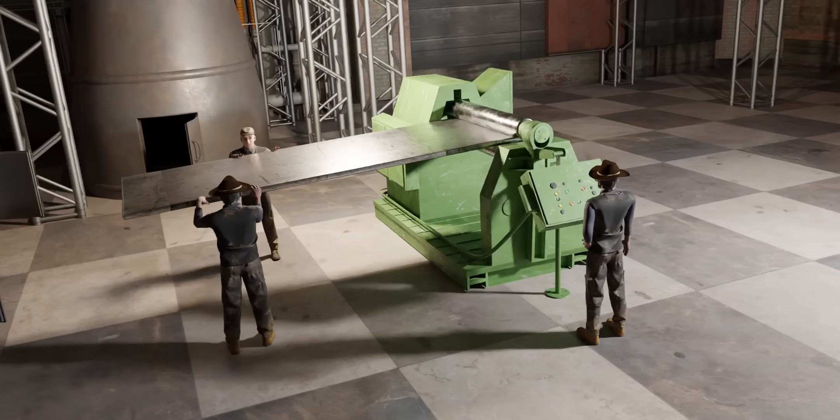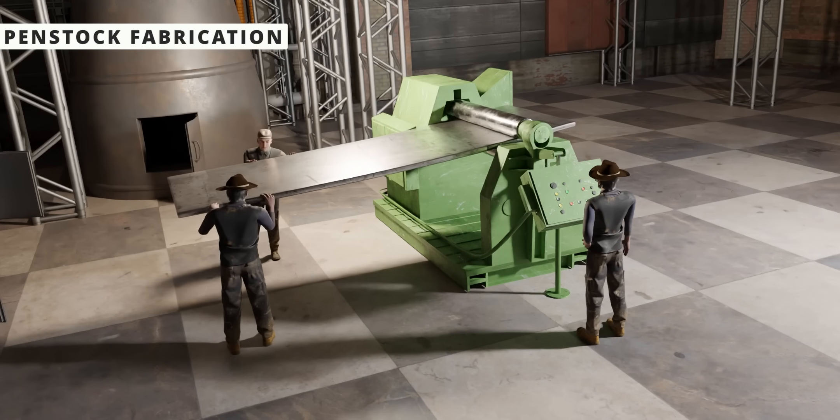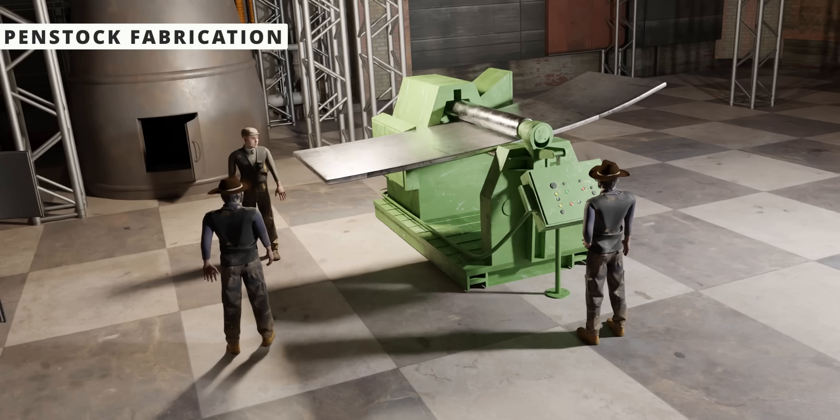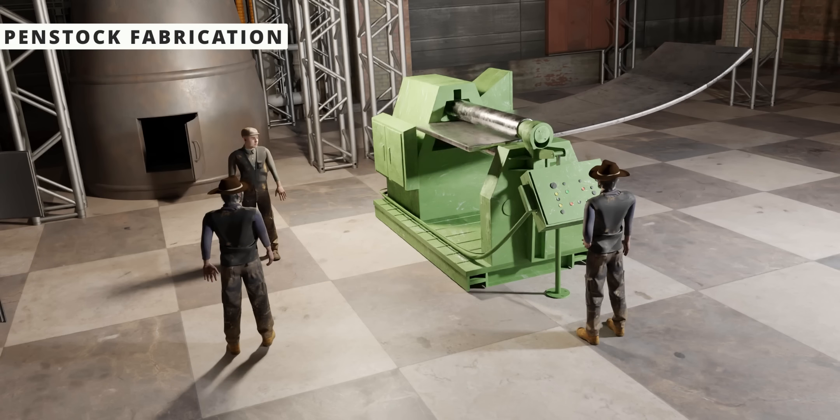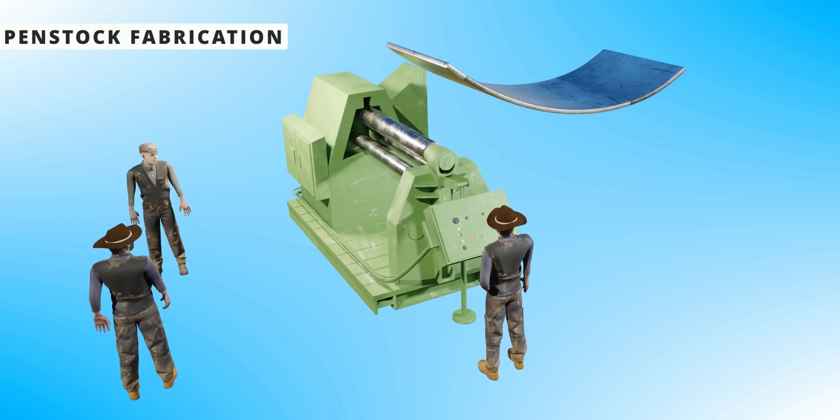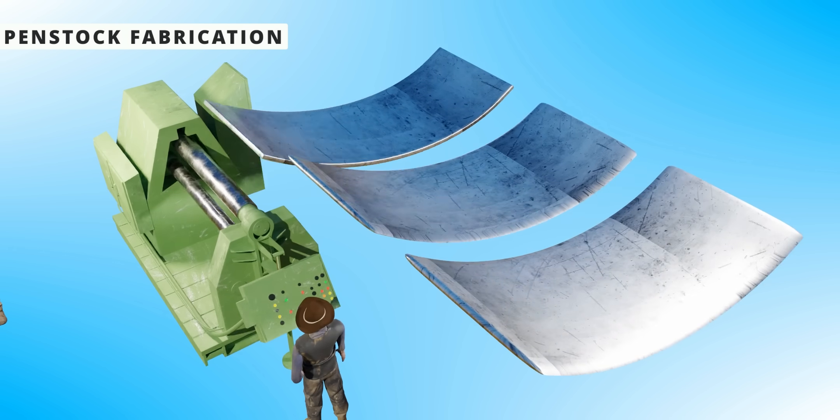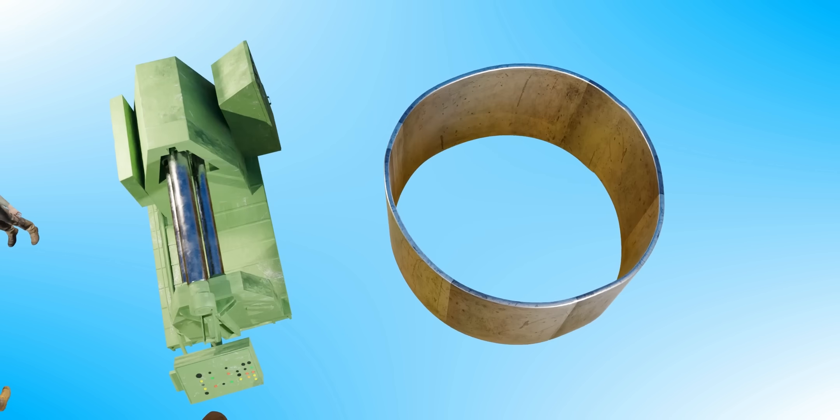To construct the penstocks for Hoover Dam, a specialized fabrication plant was set up near the dam site. The penstocks were made from steel plates, rolled using a giant press. Three such plates were welded to form large pipes.